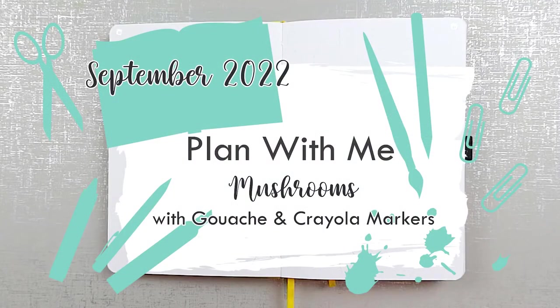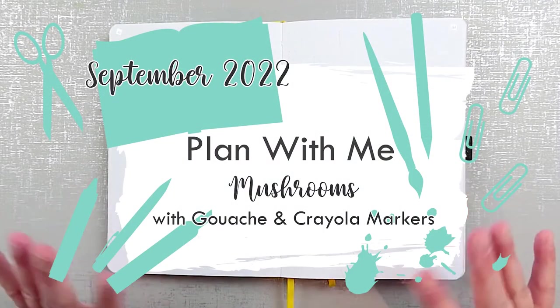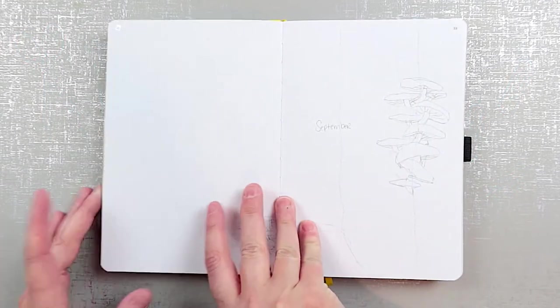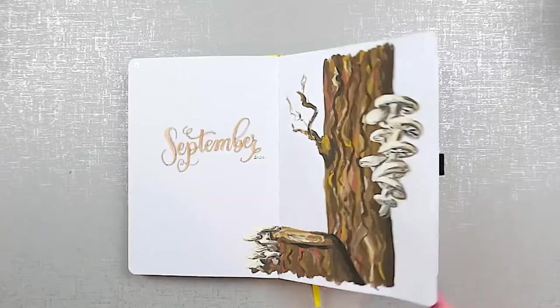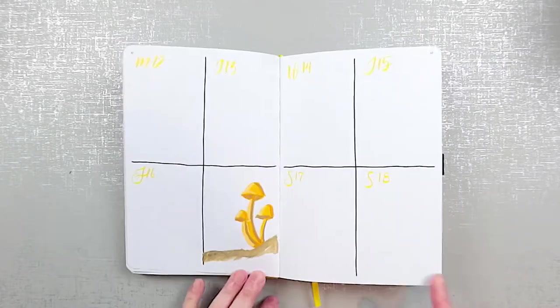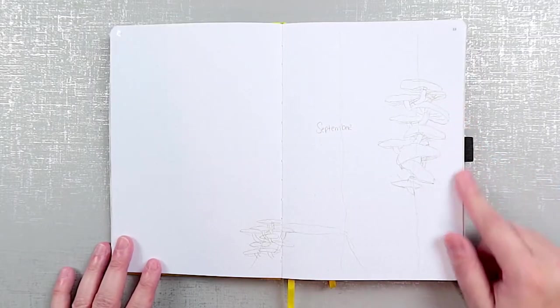Hey everybody, it's Trisha with Chocolate Musings and here is my September plan with me. It's more of a paint with me but I am setting up my bullet journal so call it what you like.